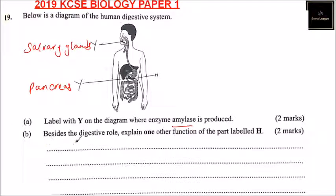Part B: beside the digestive role, explain one function of the part labeled H. The part labeled H is the pancreas.